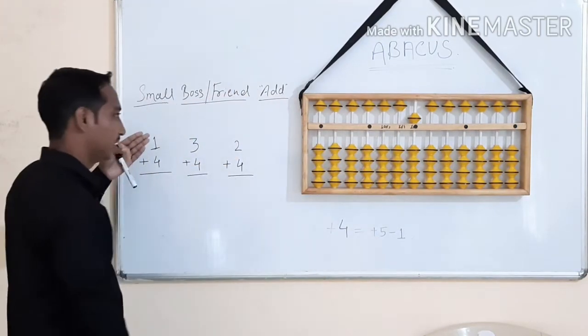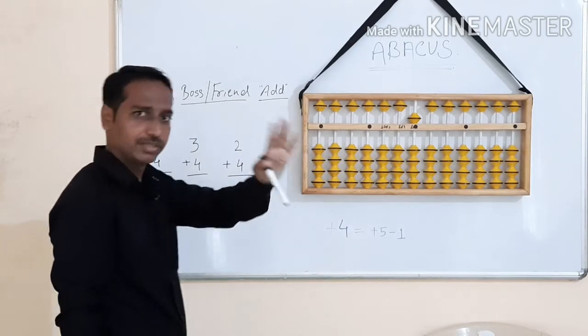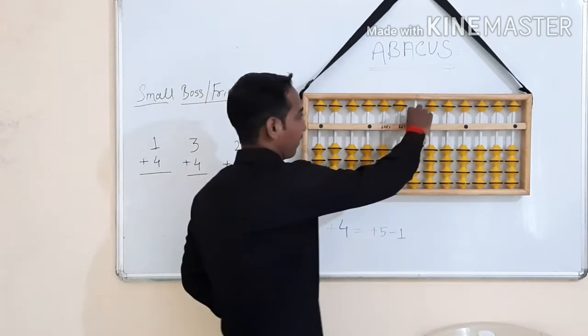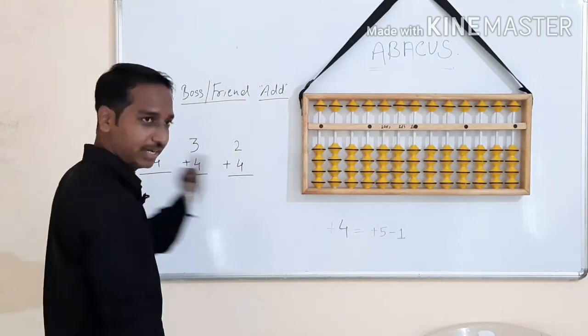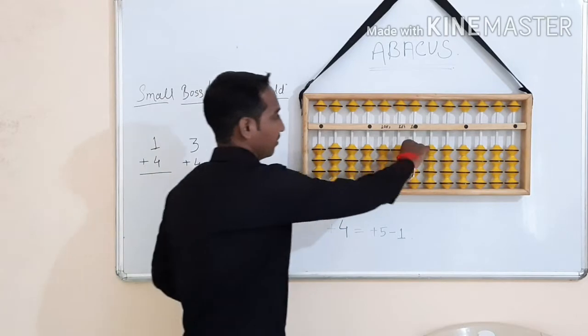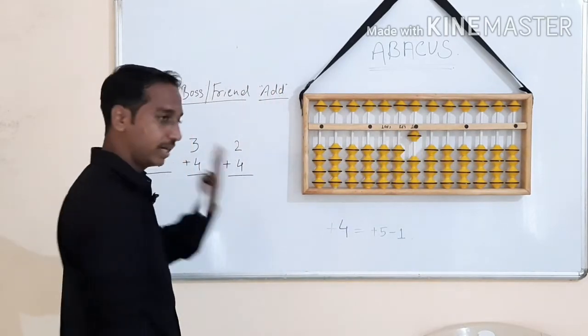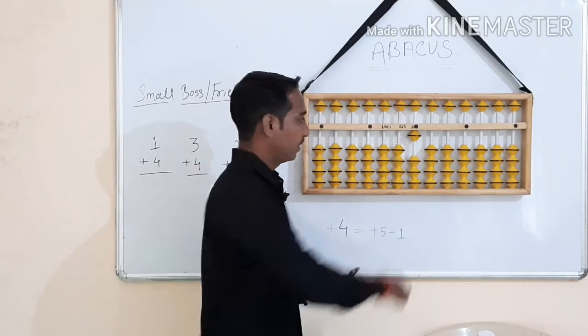We need to understand the answer 5. The first step: 1 plus 4 is Add. First, we need to add 1, then we need to add 4. If we need to add 4, we need to add 3 bits.